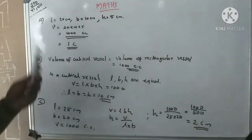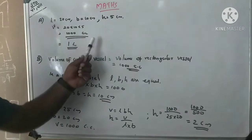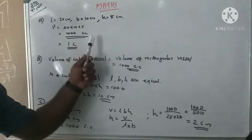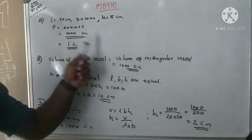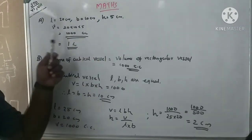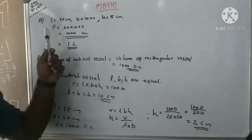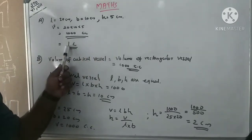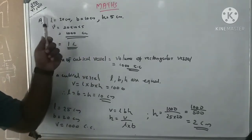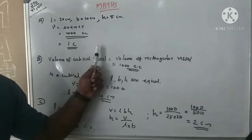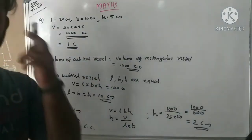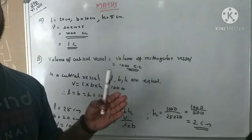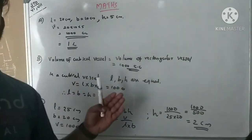The volume is 20 into 10 into 5 = 1000 cubic centimeters. Since 1000 cubic centimeters equals 1 liter, the first vessel holds 1 liter. For part B, the vessel is a cubical vessel.